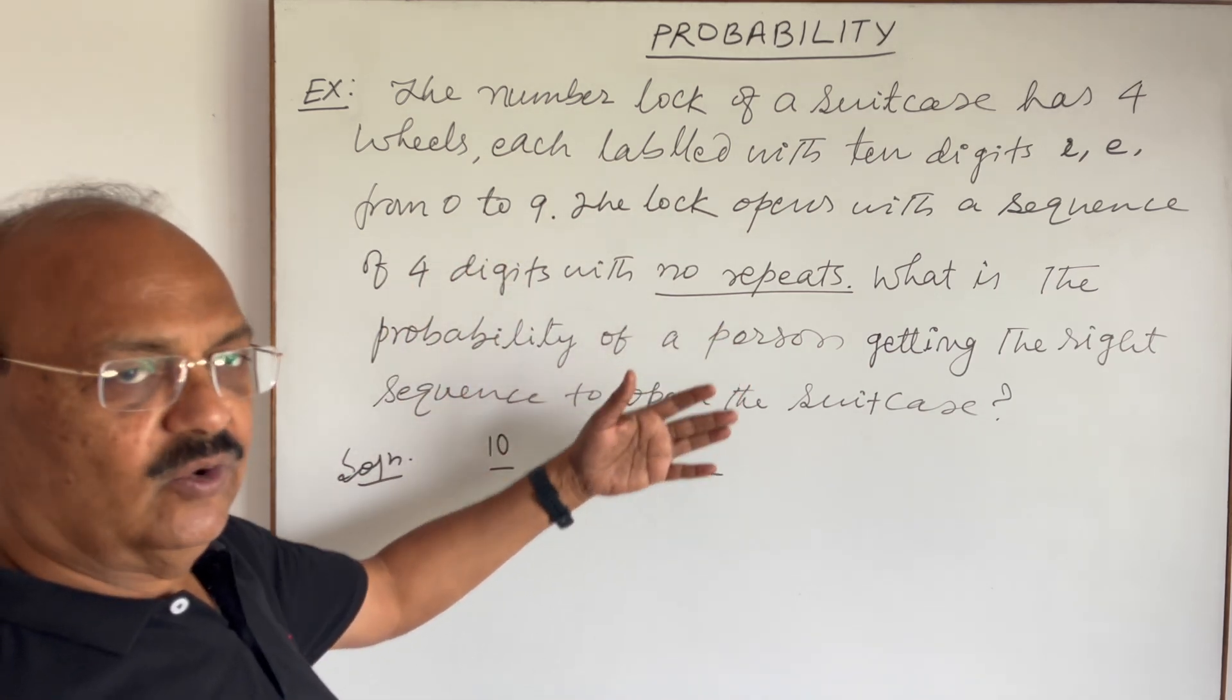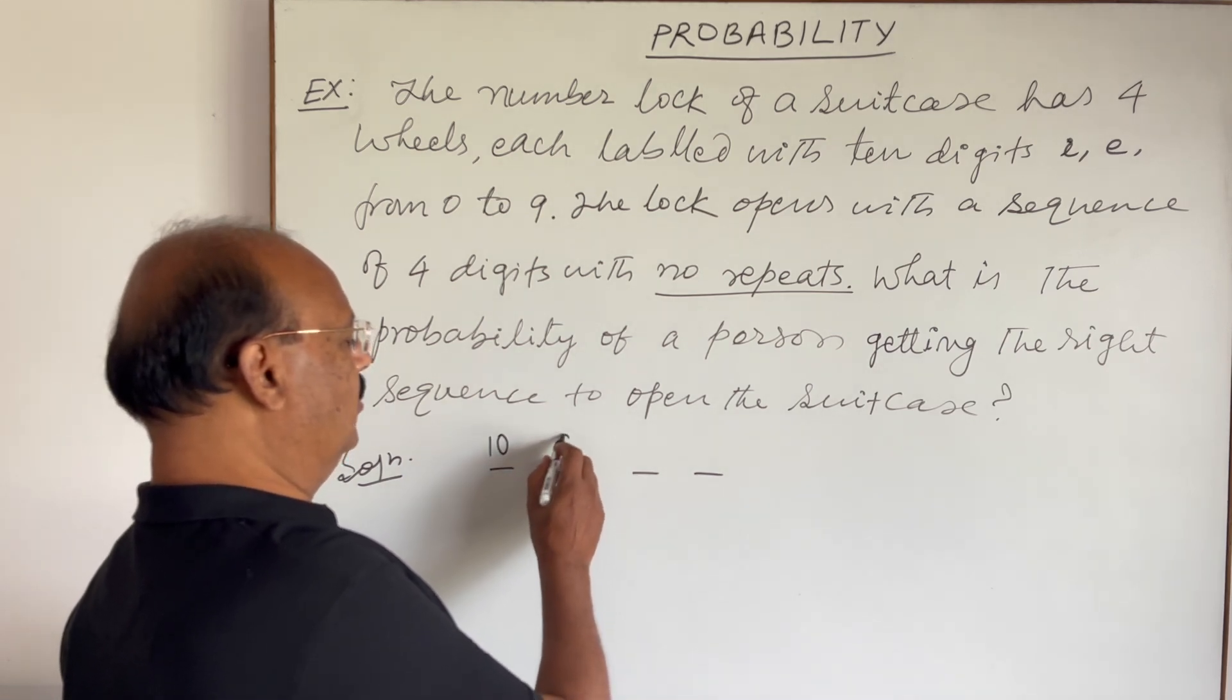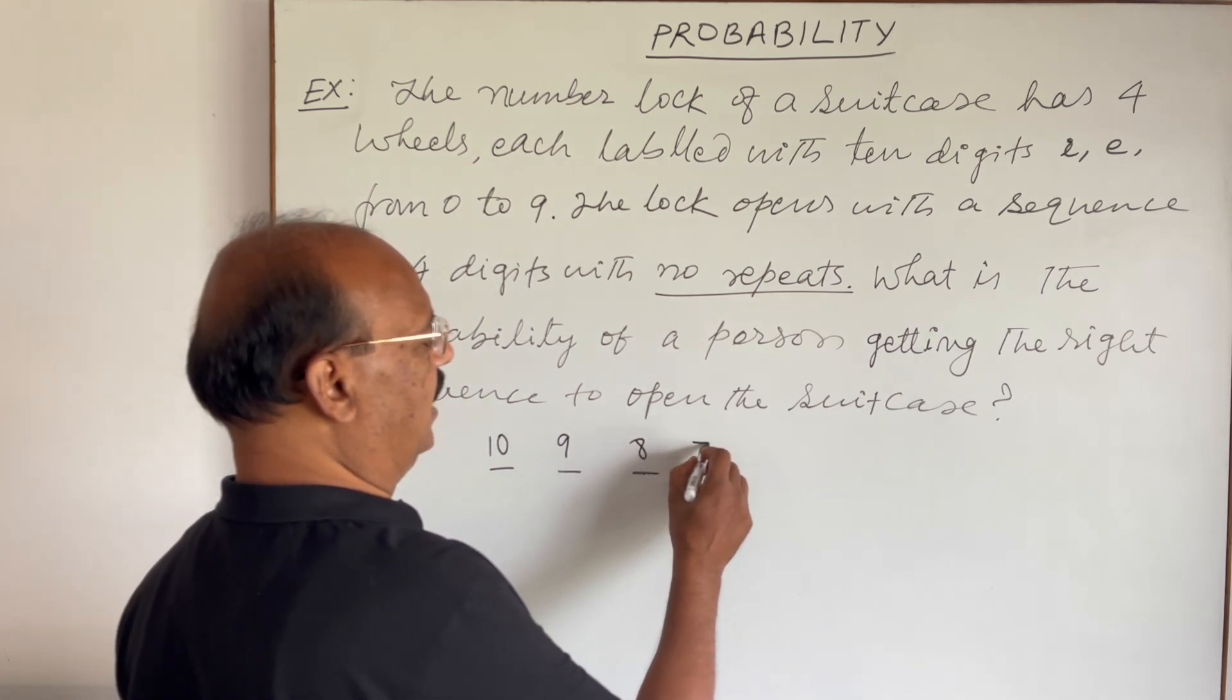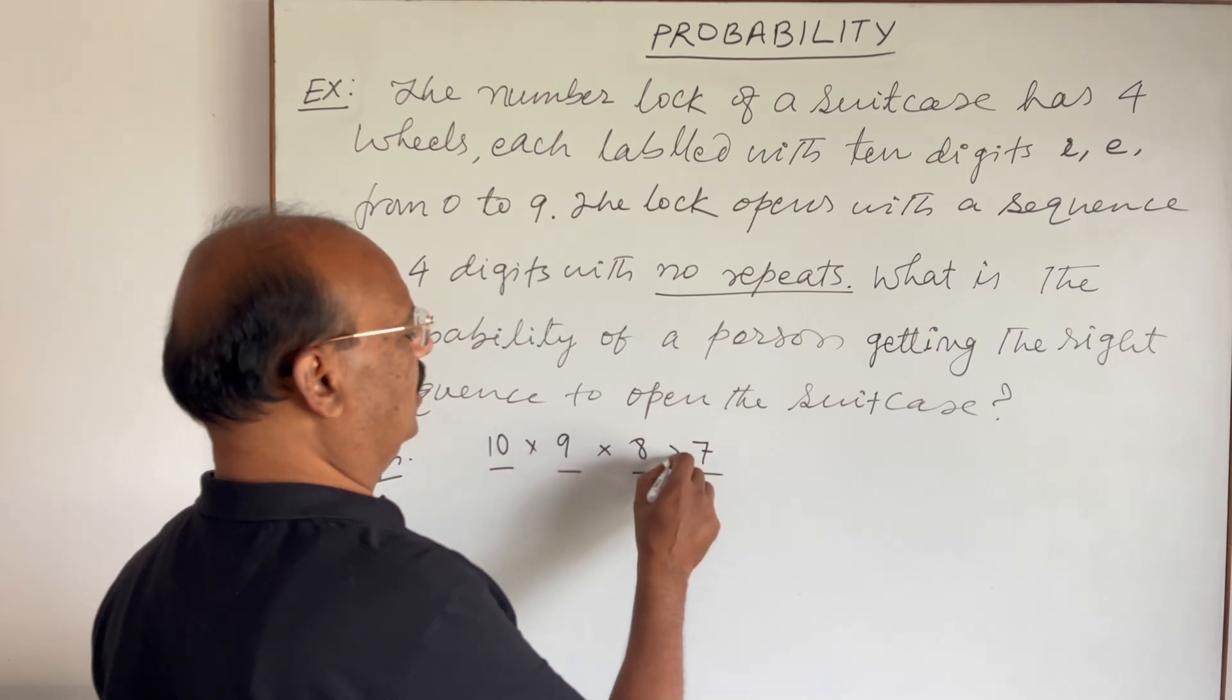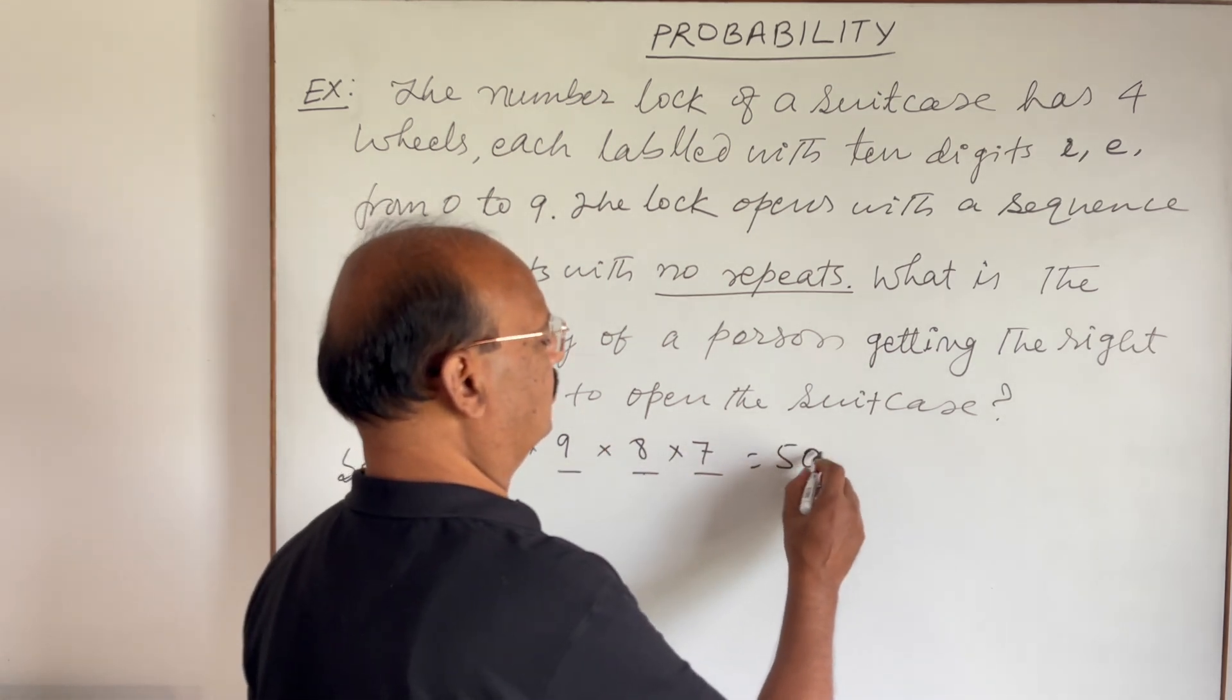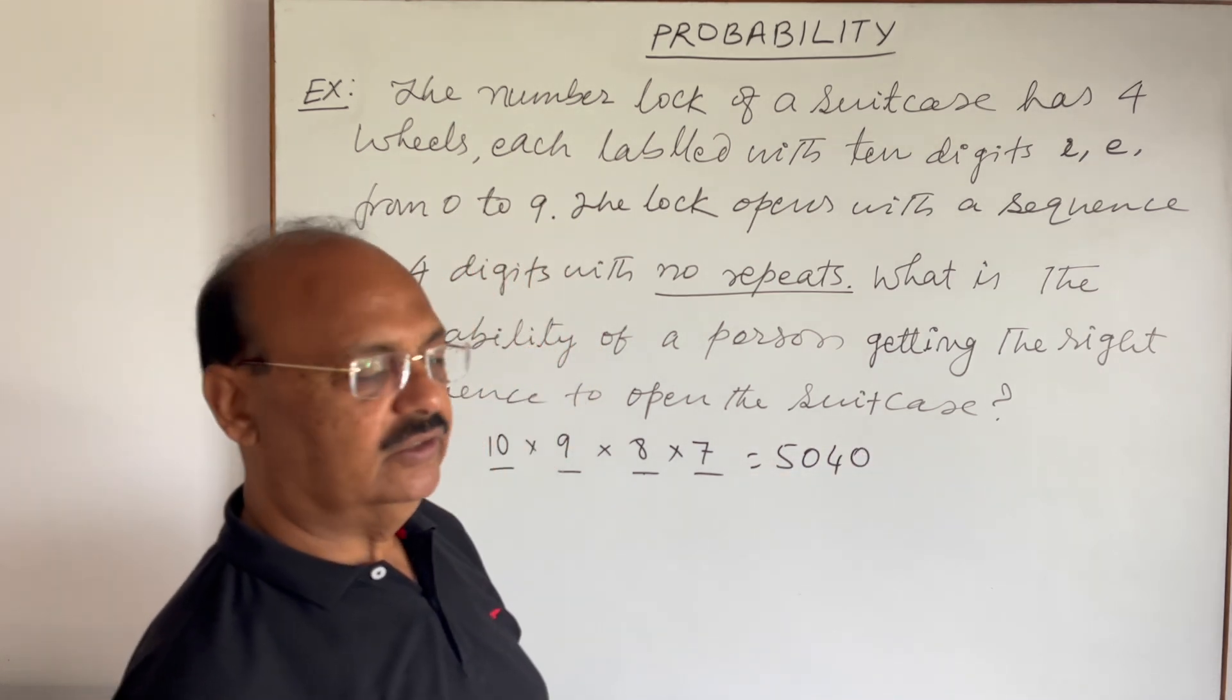And as digits cannot be repeated, so this wheel is having nine options, this wheel is having eight options, and this wheel is having seven options. So in total, after multiplying these numbers,